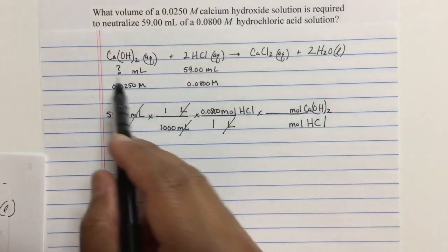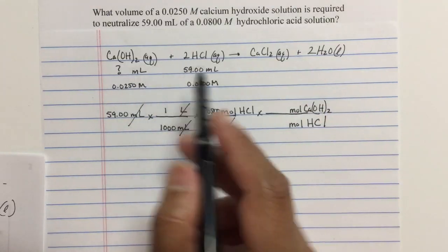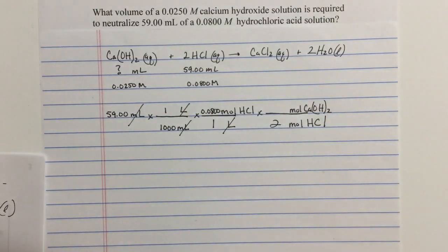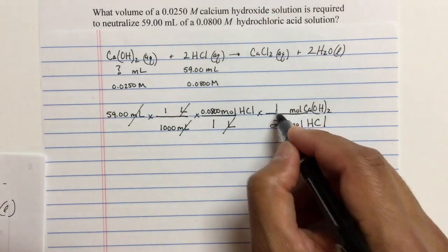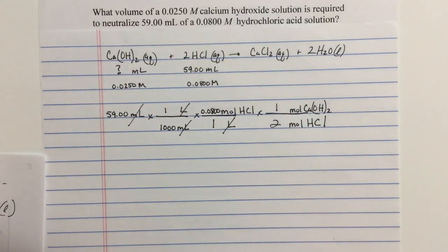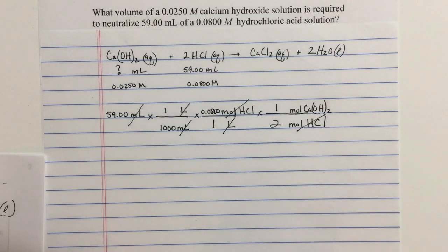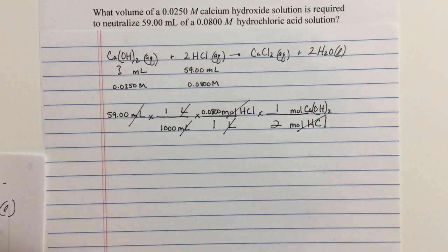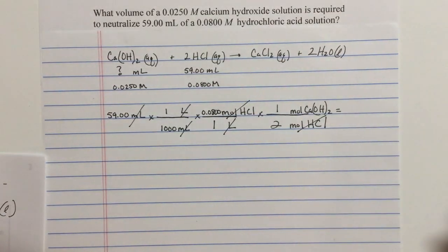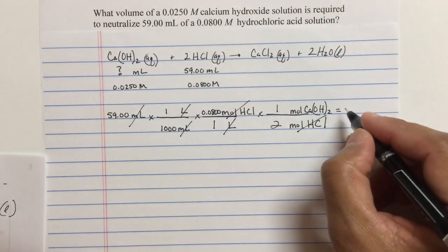The mole to mole ratio is given to us in the balanced equation. Two moles of HCl react with one mole of the calcium hydroxide. You'll notice the moles of HCl cancel. Now we can calculate the moles of calcium hydroxide.